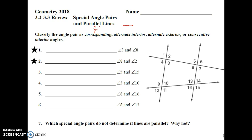Alternate interior angles, those are the angles that make the Z here and here. Alternate exterior angles, those are the angles that are outside the lines.